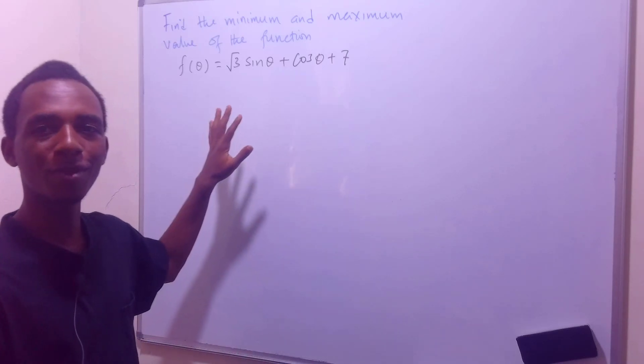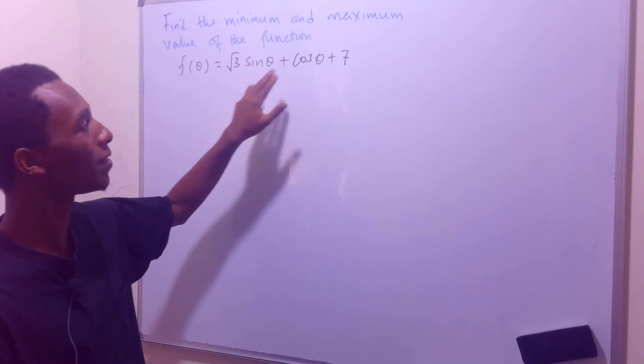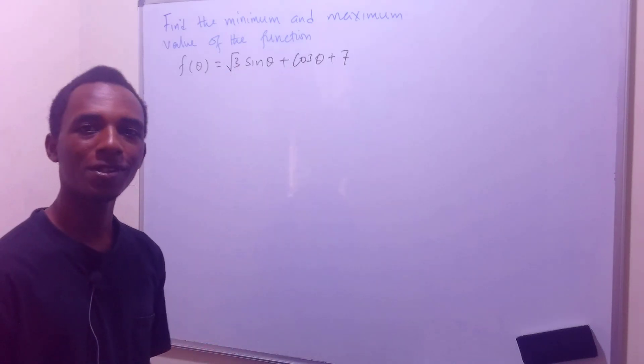So we want to find the minimum and maximum value of this function here: f(θ) = √3 sin(θ) + cos(θ) + 7.